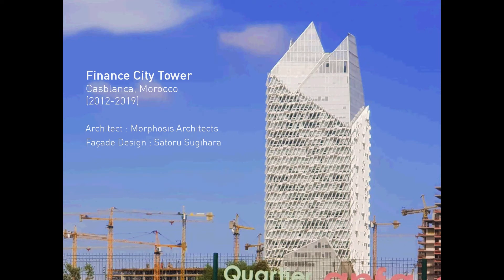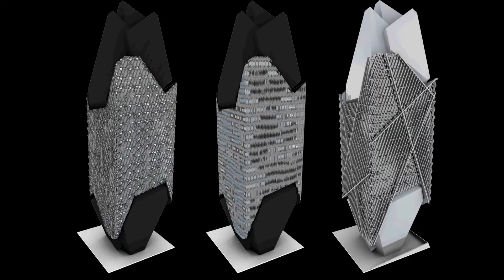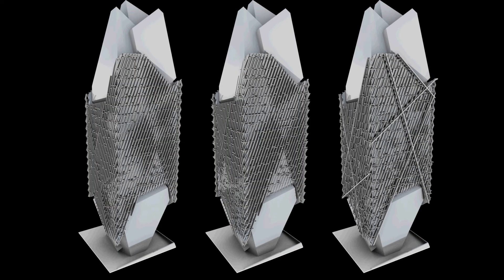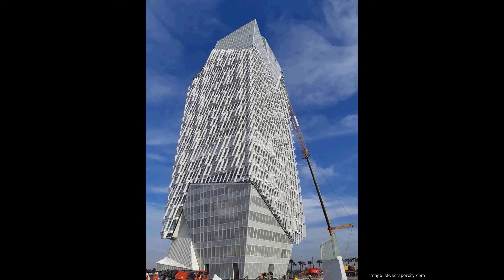The Finance City Tower in Casablanca, Morocco was a recently completed Morphosis project. This facade takes a similar approach — starting with the module and studying different ways which work best with the concept and the design of the main building. At the end, we went with solid white diagonal louvers with some random accents.